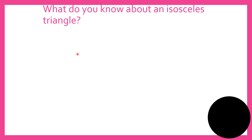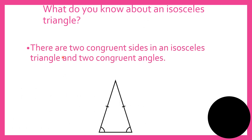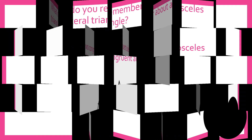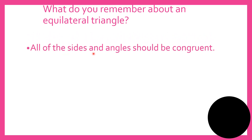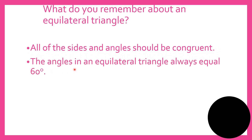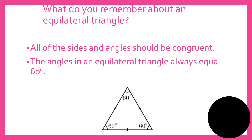What do we know about an isosceles triangle? There are two congruent sides and two congruent angles. What do we remember about an equilateral triangle? All of the sides and angles should be congruent. The angles in equilateral triangles always equal 60 degrees. Here is an example of an equilateral triangle.